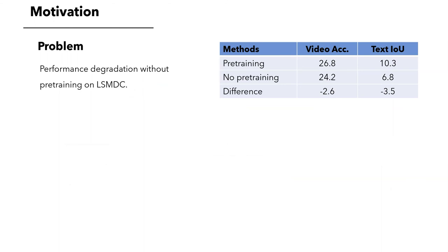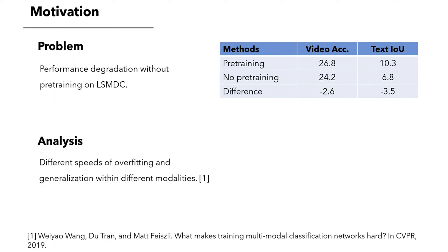For multimodal learning, pre-training on large data is usually useful. In the past, we pre-trained the video and textual sequence encoders using the large dataset LSMDC. Without the pre-training, we experienced significant performance degradation. Upon close inspection, we realized that the network components in NewMatch dealing with different modalities overfit or generalized at different speeds.